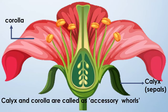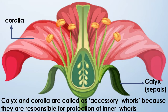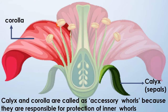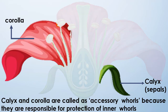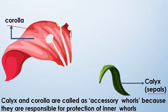Calyx and corolla are called accessory whorls because they are responsible for protection of the inner whorls. The members of calyx are called sepals and they are green in color. The members of corolla are called petals and they are variously colored — pink, yellow, purple, white.